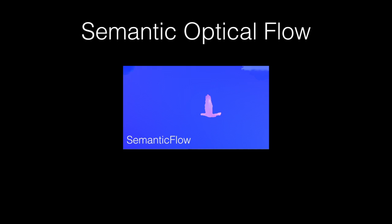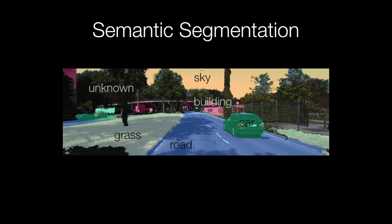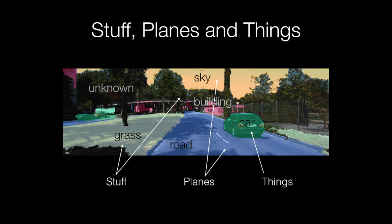For the same sequence, semantic optical flow produces better results. So how does it work? We start from a semantic segmentation of the scene, and we divide into regions according to their motion. These regions are stuff, planes, and things.